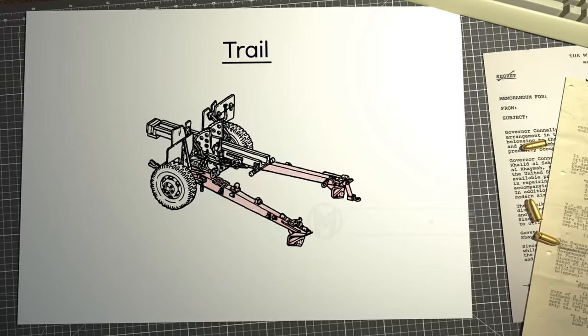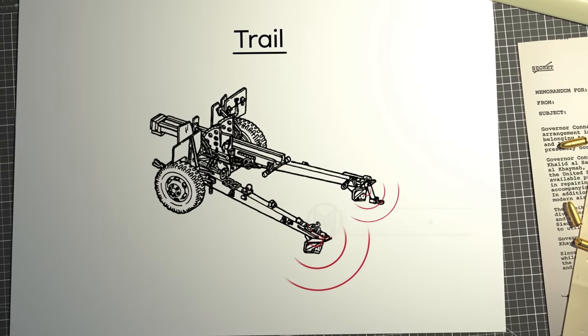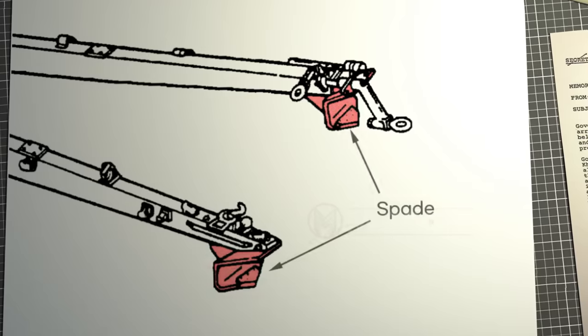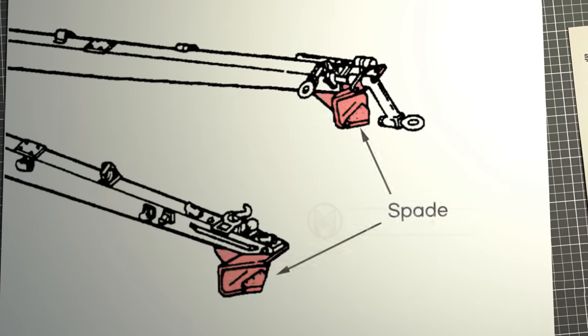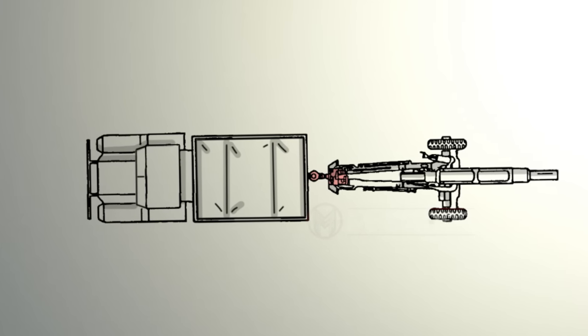At the rear part of the howitzer, there is long device called a trail. It serves to send the shock from firing to the ground, so that the cannon can remain in position steadily. The spade at the tip of the trail firmly holds the weapon when firing. The trail can also be used to mobilize a cannon when the end of it is connected to a vehicle for transportation.